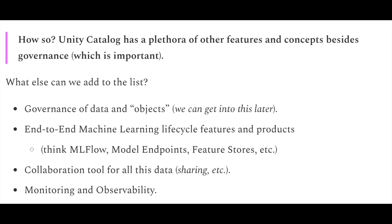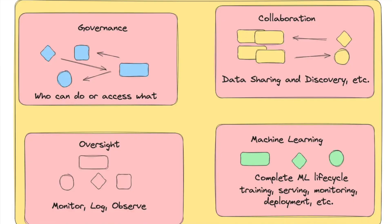To expand on what Unity Catalog is: it's a collection of features centered on governance. It governs data and objects — not just tables, but also users, groups, machine learning models — really anything can be an object in Unity Catalog. You can govern the interactions between those objects and how people interact with them. There's a lot of ML tooling built in, including MLflow, model registries, and feature stores.